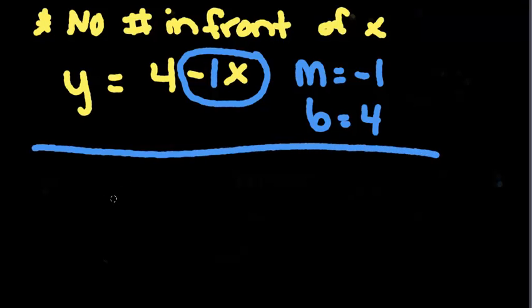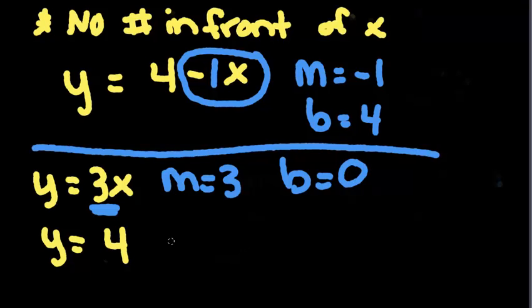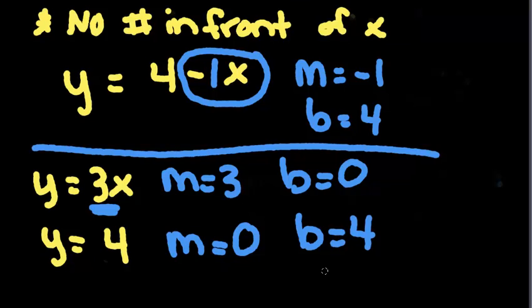And then the last thing to keep in mind is what happens when you don't have a b or you don't have an x. So you might have y equals 3x or you might have y equals 4. In the first case, we don't have a b. You can see we have a slope here because it has the x. So m is equal to 3. We don't have a b, so b is simply 0. In this case, we don't have an m because there's no x here. So the m is going to be 0 because it isn't there. And the b is there and it's 4. So if you don't have one of the two pieces, then it gets a 0.